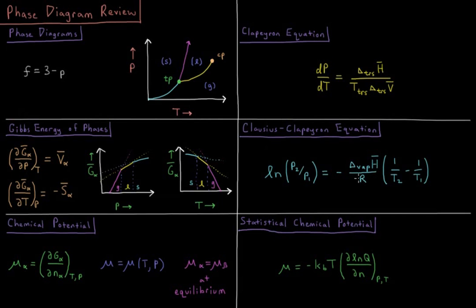We can actually compute what the enthalpy of vaporization is if we measure a series of what phase transition occurs at a given set of pressures and temperatures varying one variable or the other.